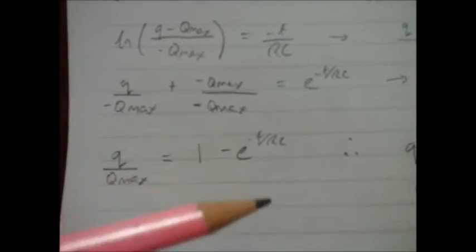And then the last step is I need to make this Q positive. So I'll take that to the other side, bring the E to the other side, and I'll end up with Q over Q max equals 1 minus E to the minus T divided by RC. And then if I multiply through by Q max, I get my final equation here. Q equals Q max brackets 1 minus E to the minus T over RC.